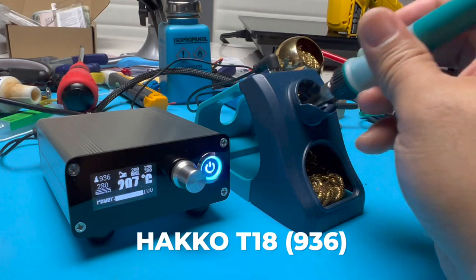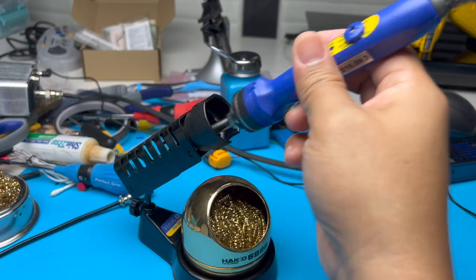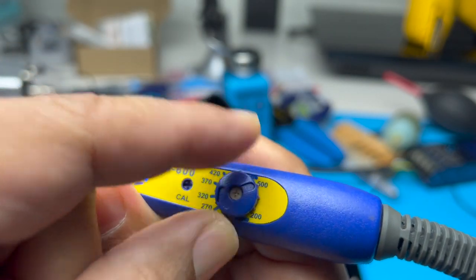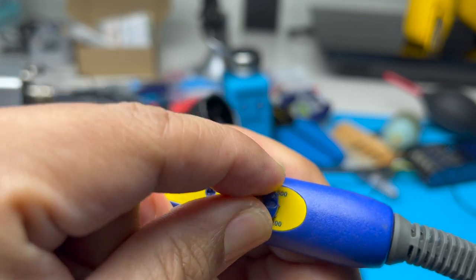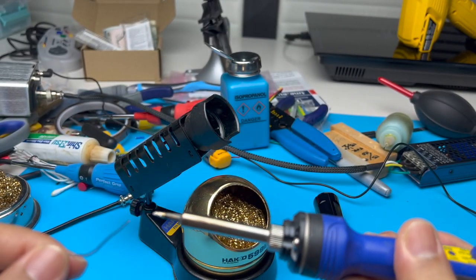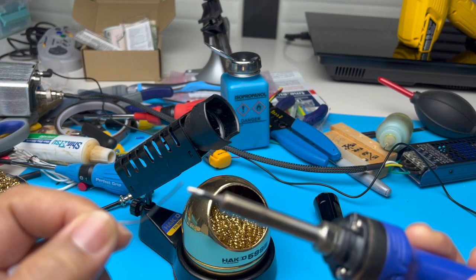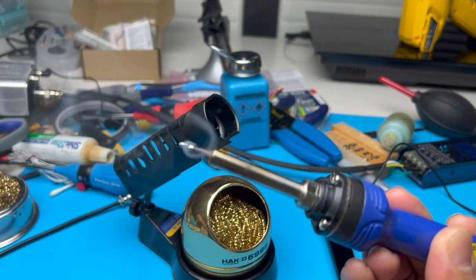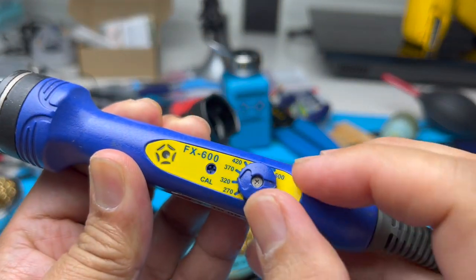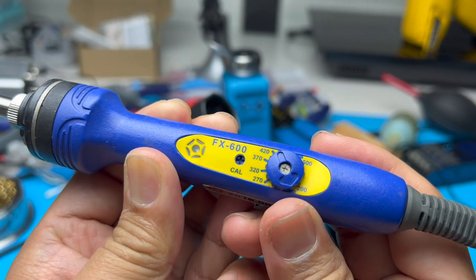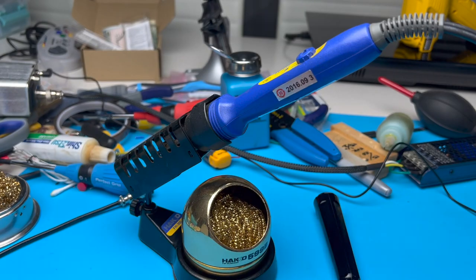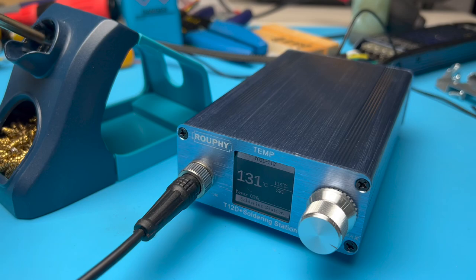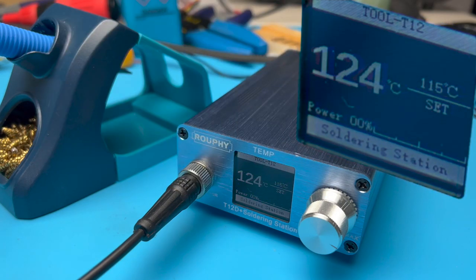My previous soldering station wasn't a soldering station at all - it was a portable soldering iron, the Hakko FX-600. I just wanted a faster, easier way to lower the temperature while the soldering iron was sitting. Leaving a soldering station at working temperature really shortens the tip life. Lowering the soldering iron temperature while the iron is sitting extends tip life. So I decided to try out these T12 clones, which also provide a sleep feature.